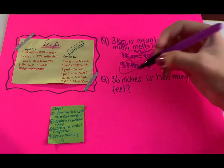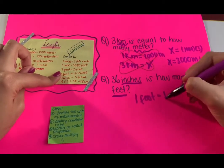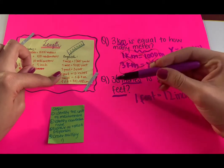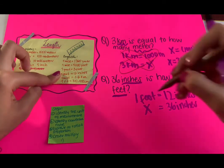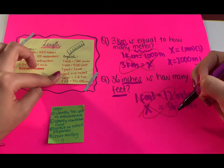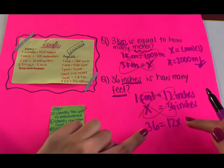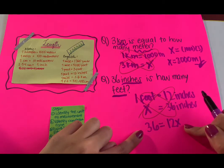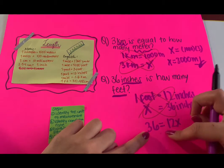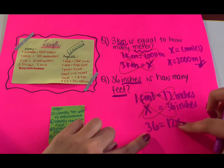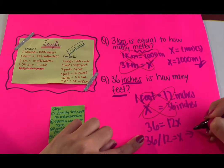Next: 36 inches is how many feet? We have inches and feet — conversion rate: one foot equals 12 inches. We have 36 inches and we're finding feet, so feet is x. Cross multiply: 36 times 1 is 36, and 12 times x is 12x. To isolate x, divide both sides by 12: 36 divided by 12 equals x, so x equals 3 feet.